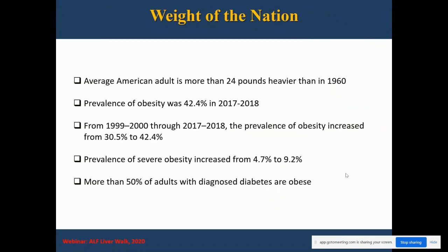The prevalence of obesity was 42.4% in 2017–2018. Looking from 1999–2000 to this point, the prevalence of obesity increased from 30.5% to this number. The prevalence of severe obesity increased from 4.7% to 9.2%. What's staggering is that 50% of adults with diagnosed diabetes are obese.